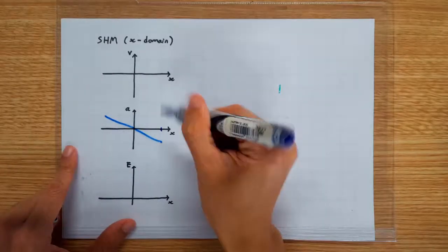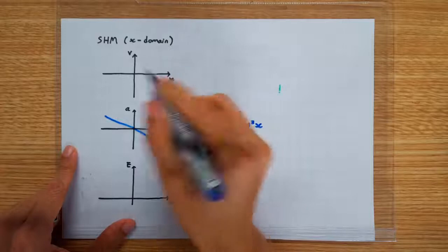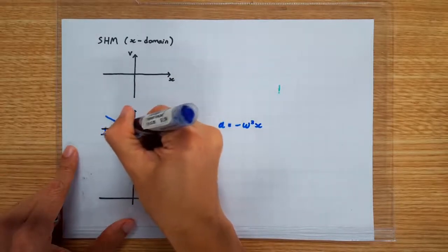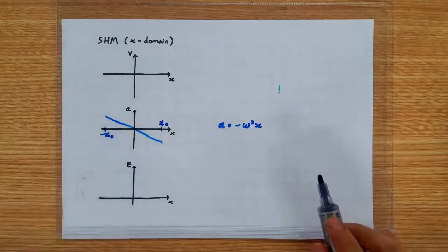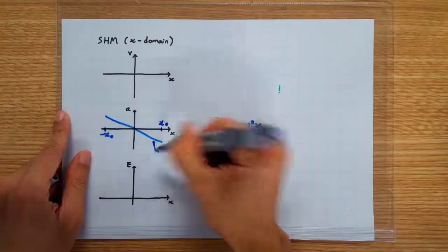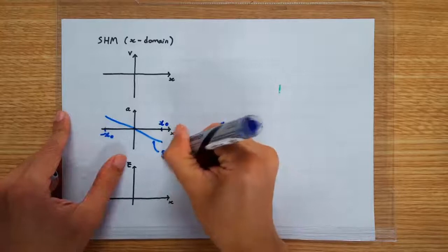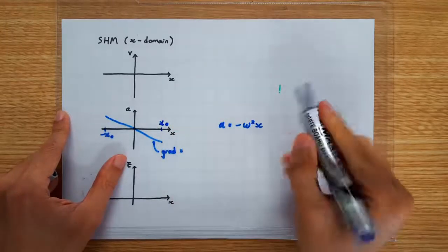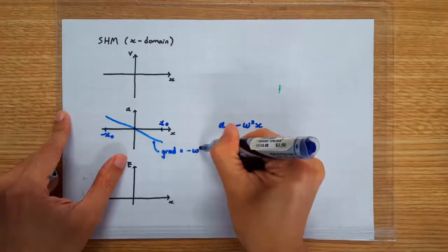The graph should not extend beyond the amplitude of the oscillation, X0 and negative X0. Most importantly, you should know that the gradient of this straight line can be equated to negative omega square.